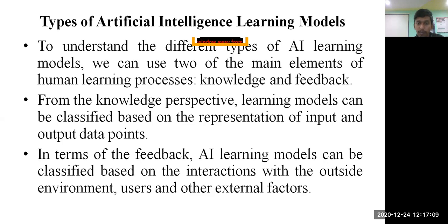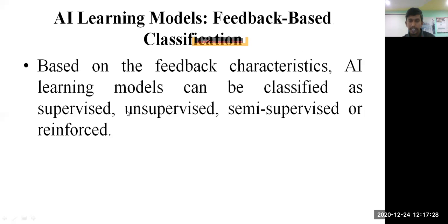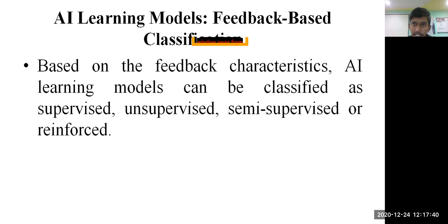The second classification is based on the feedback of a system. AI learning models can be classified based on interactions with the outside environment, interactions with users, and other external factors. So learning systems are classified based on knowledge and based on feedback. Now let's talk in depth about what these feedback-based and knowledge-based models are.